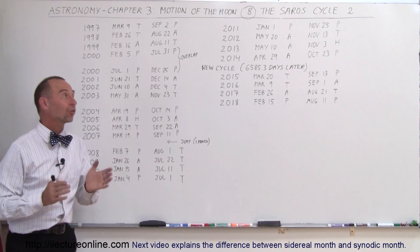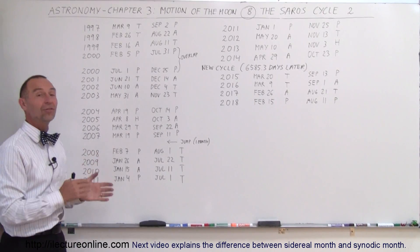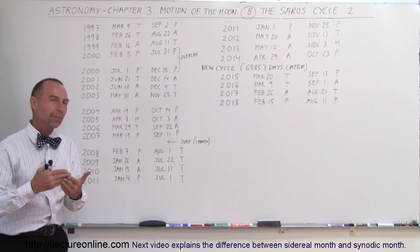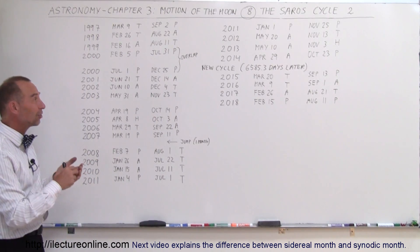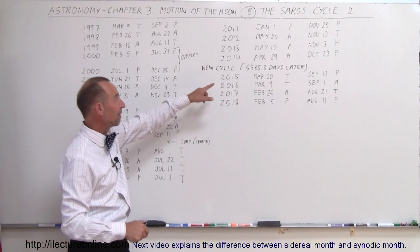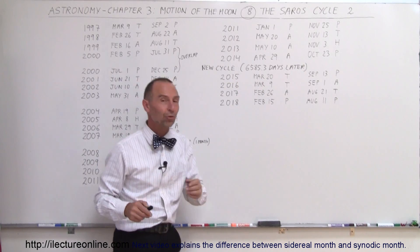Welcome to our lecture online and here we have the Saros cycle in all its detail. So this is a detailed look at the solar eclipse cycle that occurs every 18 years, 10 days or 10.3 days. So the total of 6,585.3 days per cycle.